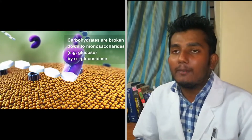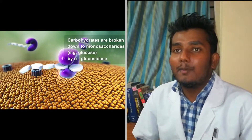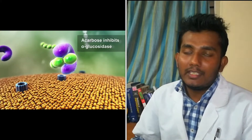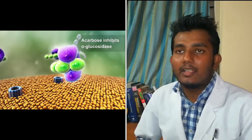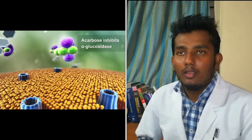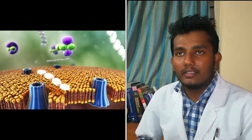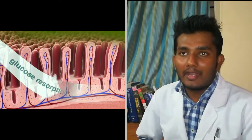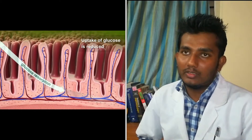Physiologically, the carbohydrate complexes present in the lumen of the small intestine are broken down by the enzyme named alpha-glucosidase, before the glucose molecules are taken up and reach the bloodstream. When you give Acarbose, it competes with the carbohydrate complex and binds with the alpha-glucosidase. As a result, the carbohydrate complex remains intact, and it causes a reduction in your glucose levels.